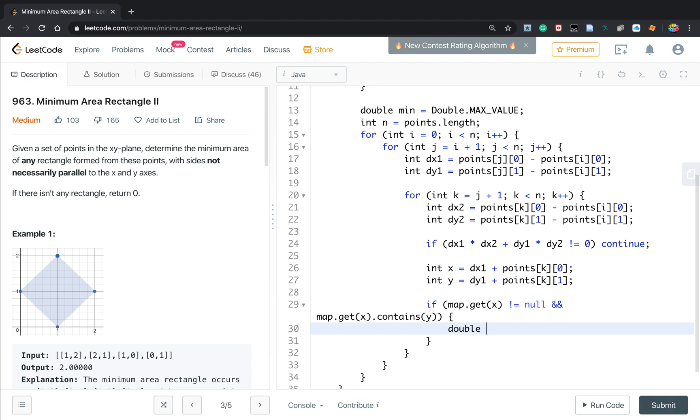So if map get x not equal to none, and the map get x contains y, so that means exists this fourth point. We calculated their area. There will be math sqrt square root of the dx1 times dx1 plus dy1 times dy1 and times math square root dx2 times dx2 plus dy2 times dy2.